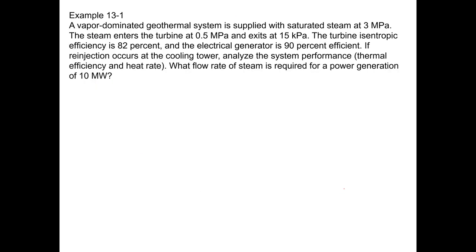Let's look at this example problem from your book. The problem reads: a vapor-dominated geothermal system is supplied with saturated steam at 3 MPa. The steam enters the turbine at 0.5 MPa and exits at 15 kPa.